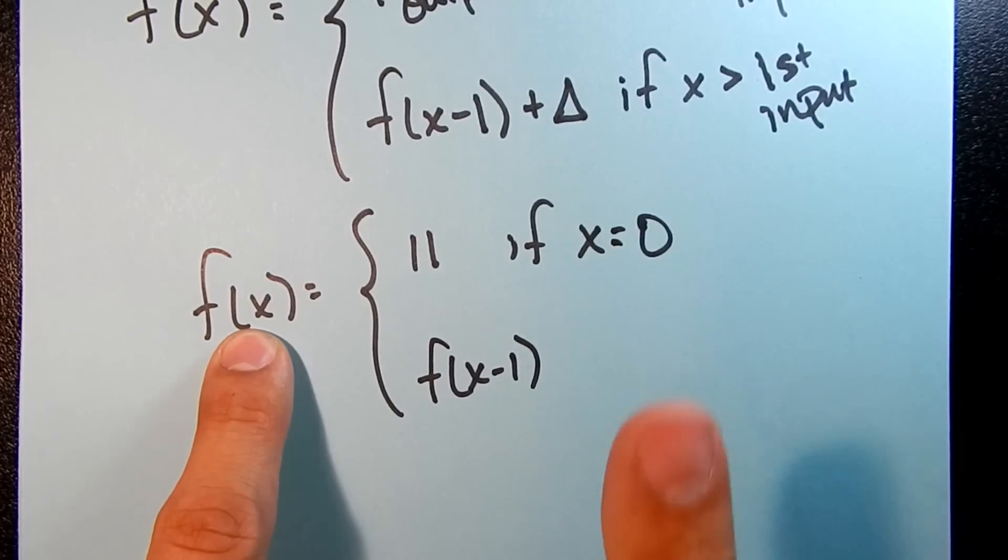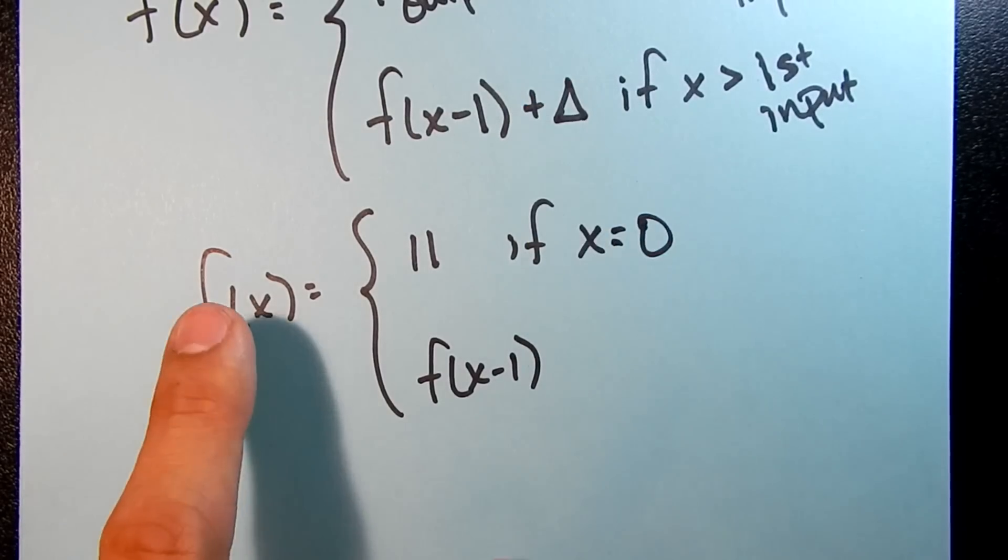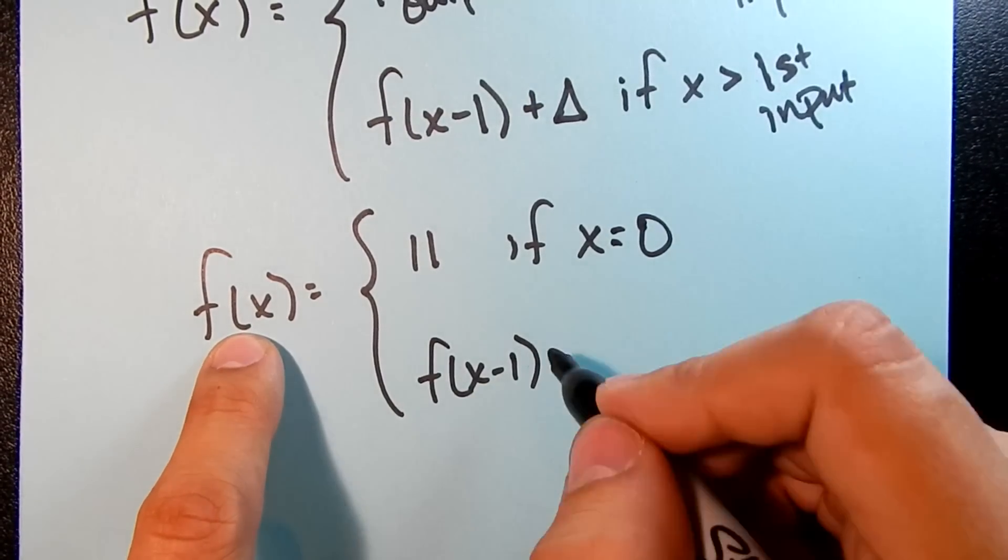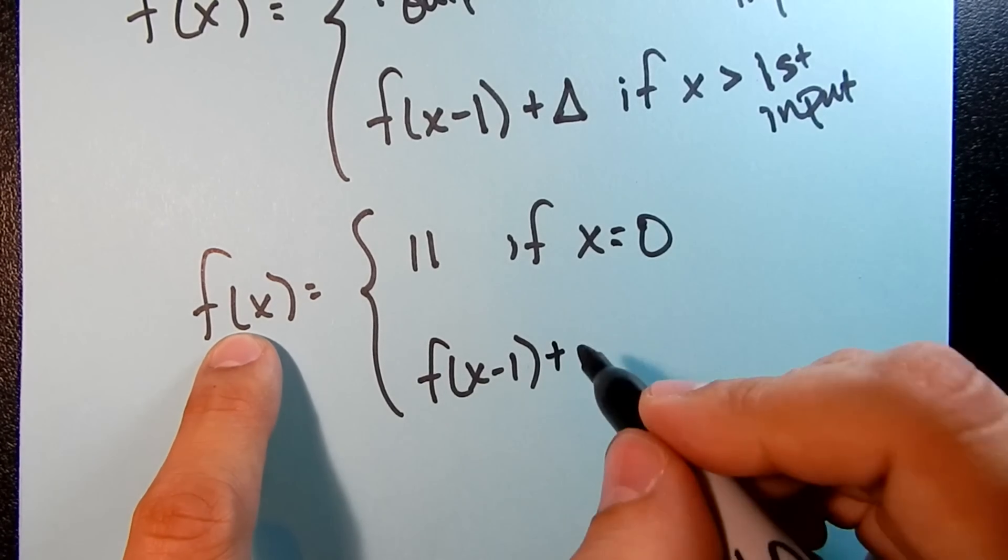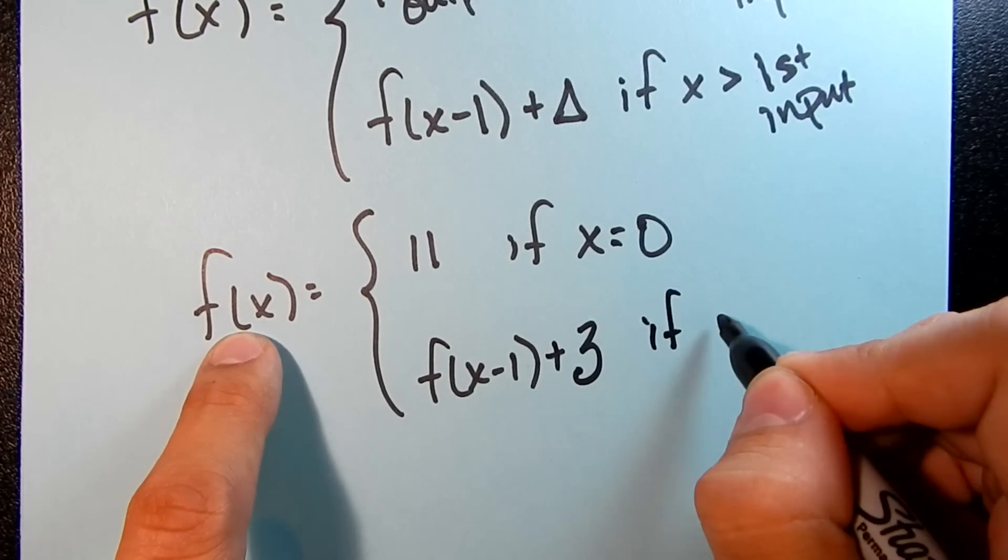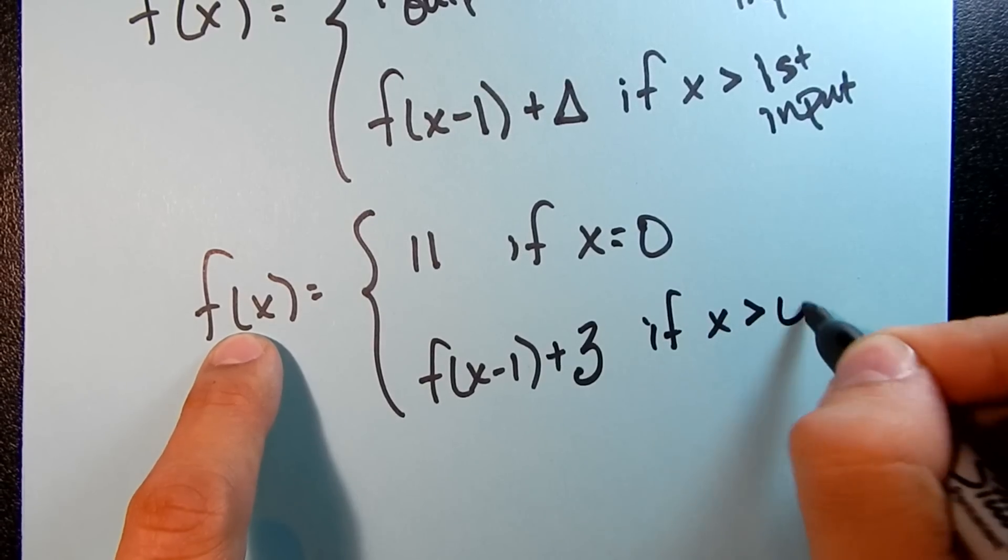So this is saying, to find the next one, take the previous one and add your delta term. So for us, that was 3. And we'll say, if x is greater than 0.